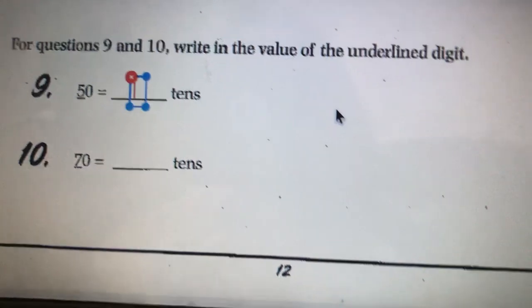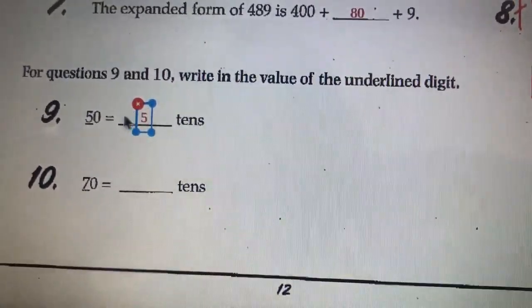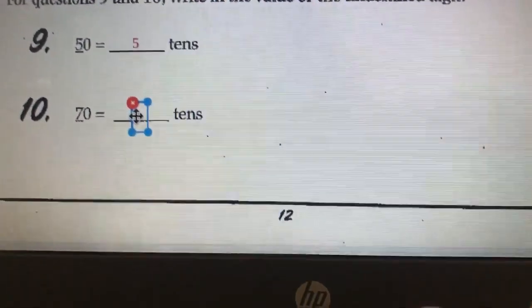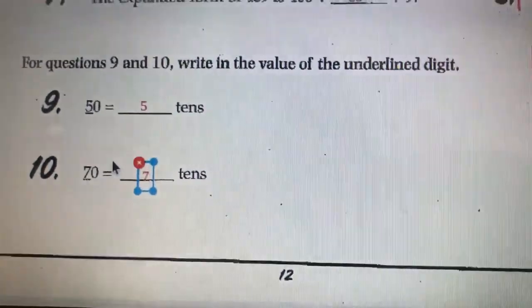But saying, how many 10s is it? 50 is 5 tens. That means 5 times 10 is 50. 70 is 7 tens. So, 7 times 10 is 70. So, we'll be right back.